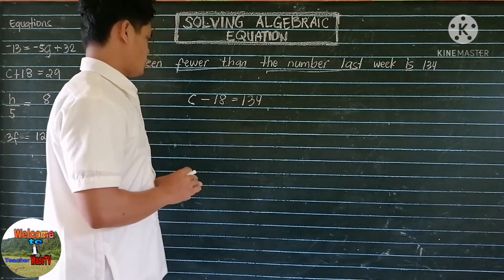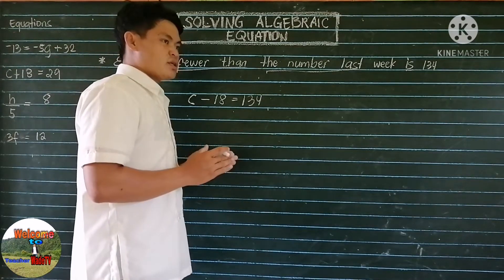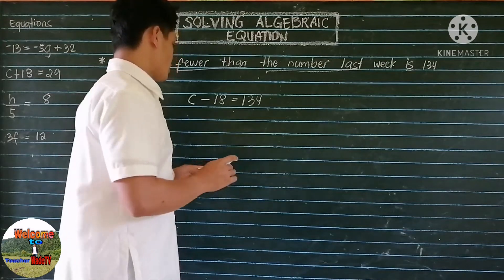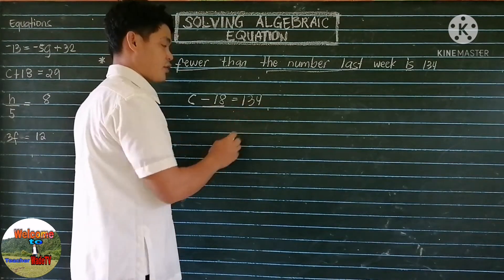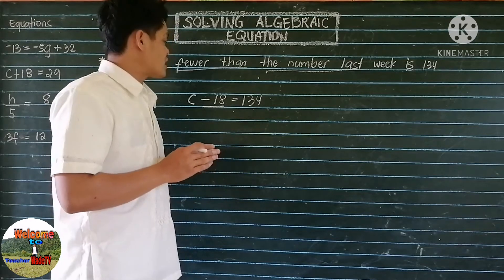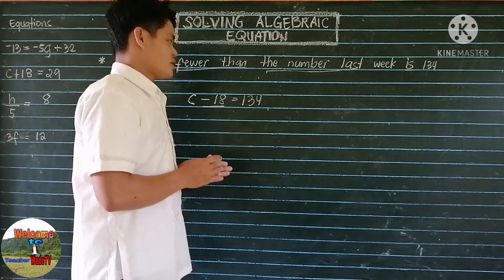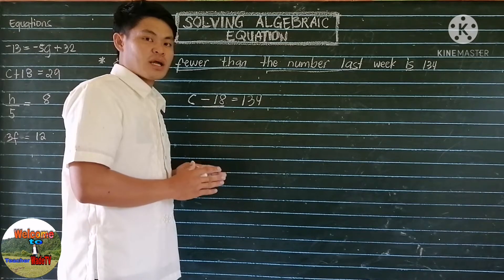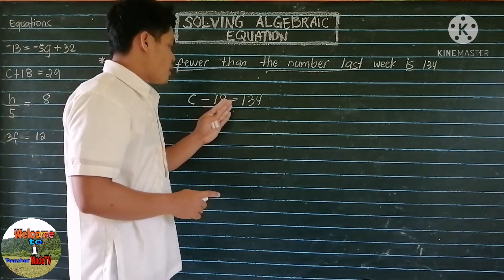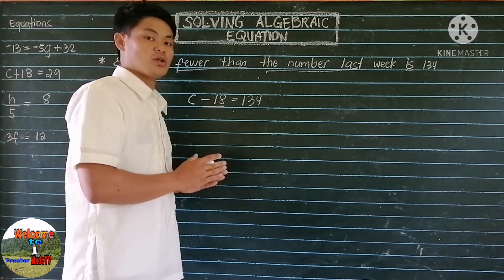Now let us solve this equation. Before we solve, we have to remember that we need to combine similar terms before performing any operation. We have negative 18 and 134 — they are similar terms. To combine them, we need to transpose 18 to the right of the equal sign. When we transpose, we transfer a number or variable across the equal sign, and its sign will be changed.